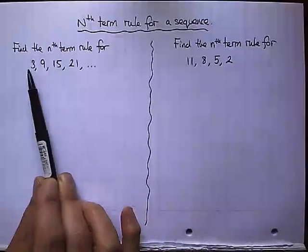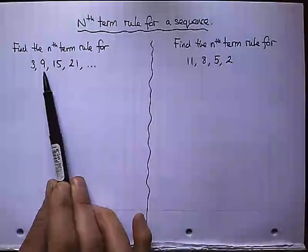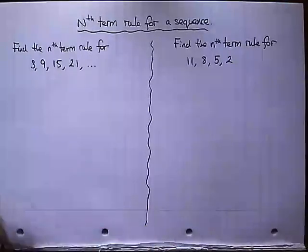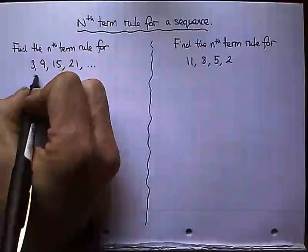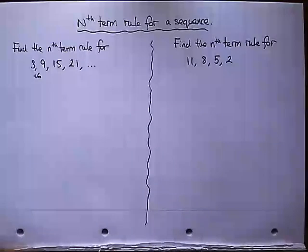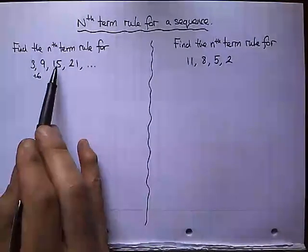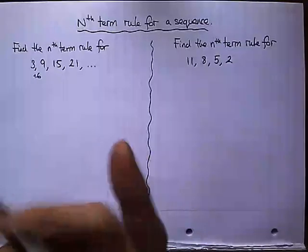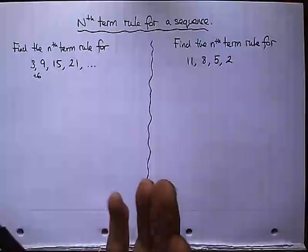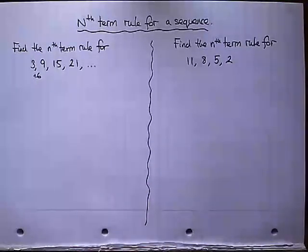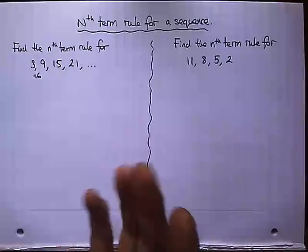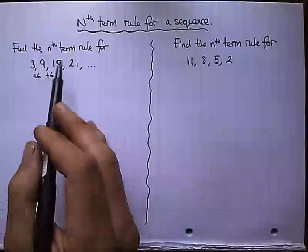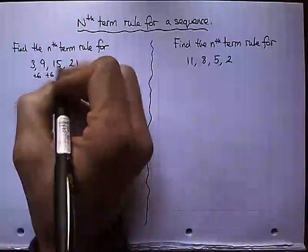So let's have a look at that. It goes up from 3 up to 9. So if you do 9 take away 3, you'll figure out that that's a plus 6. And then if we go from 9 to 15, that's plus 6 as well. And then to go from 15 to 21, well that's plus 6.